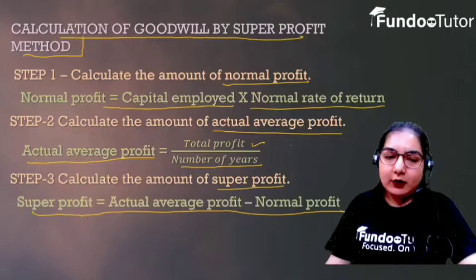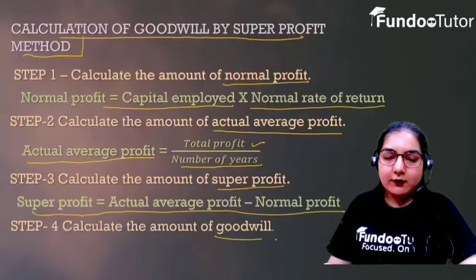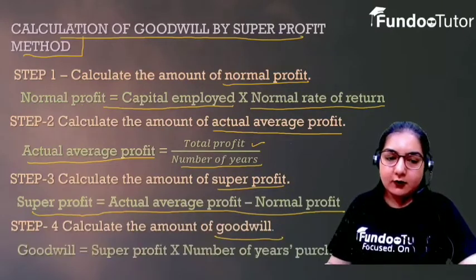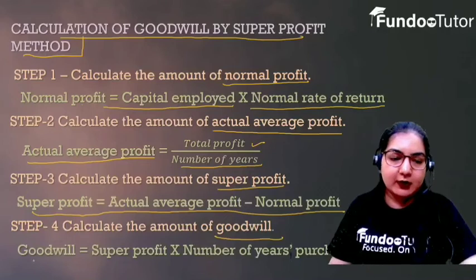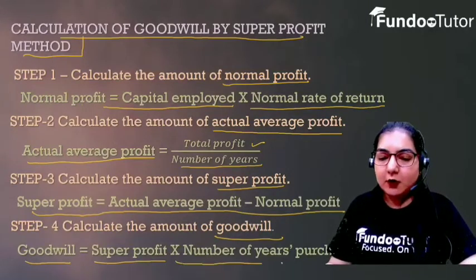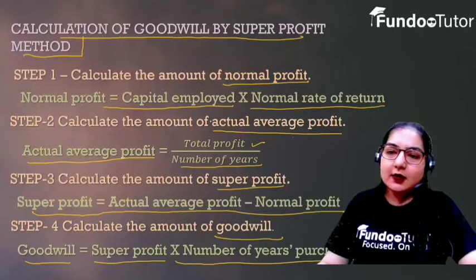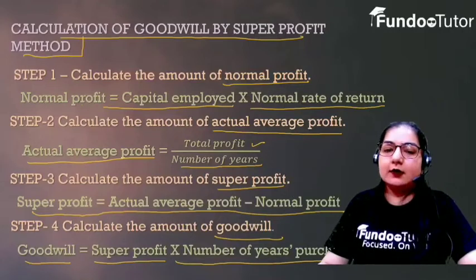Then, you calculate Goodwill. Goodwill is equal to Super Profit multiplied by the Number of Years of Purchase. Now let's look at the application of these steps using a question.